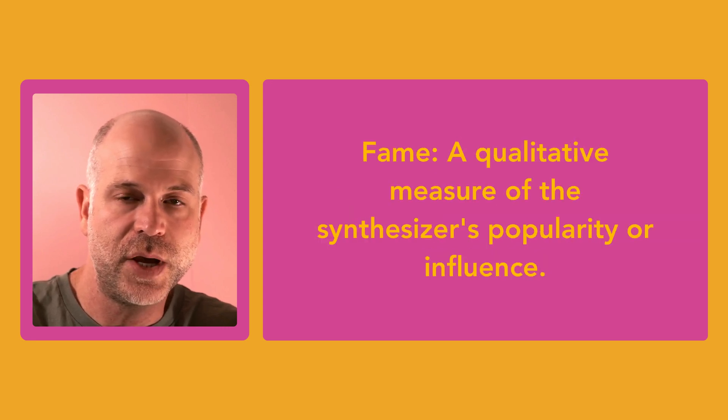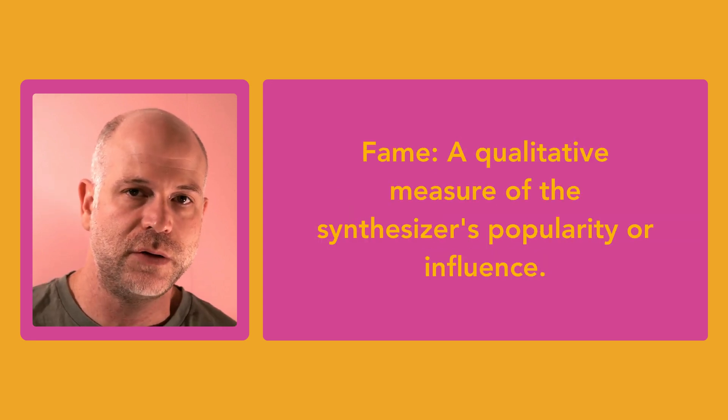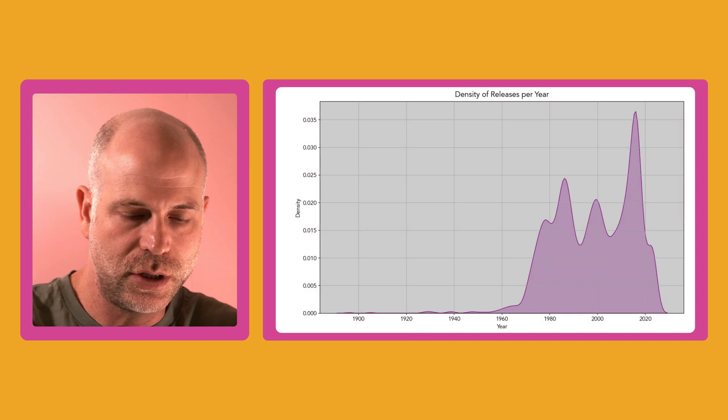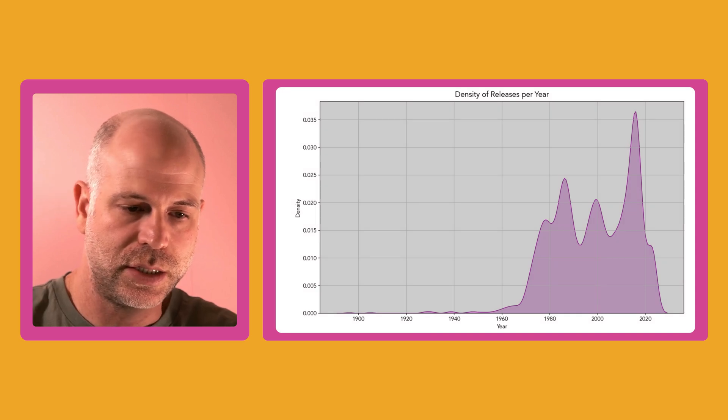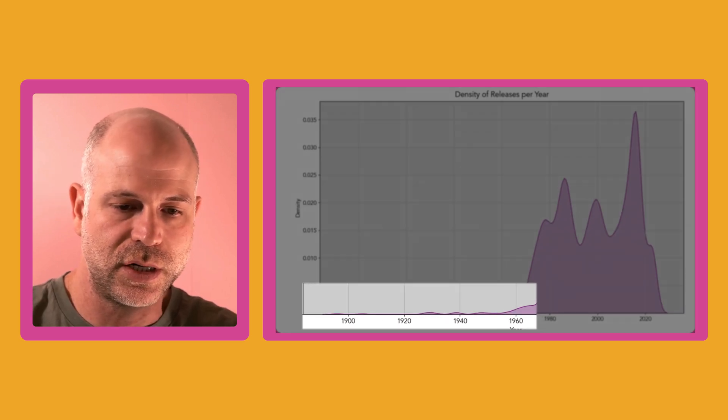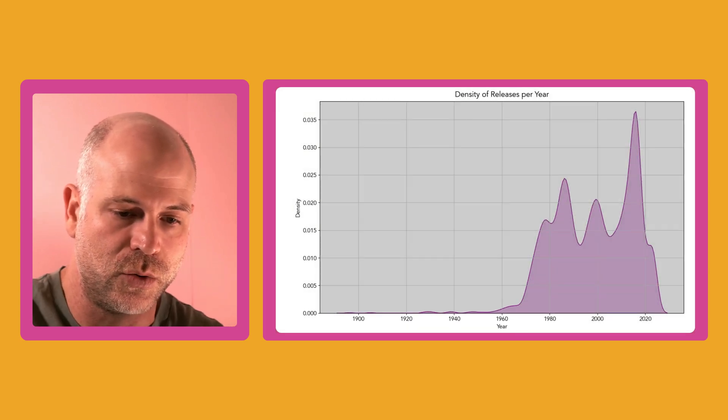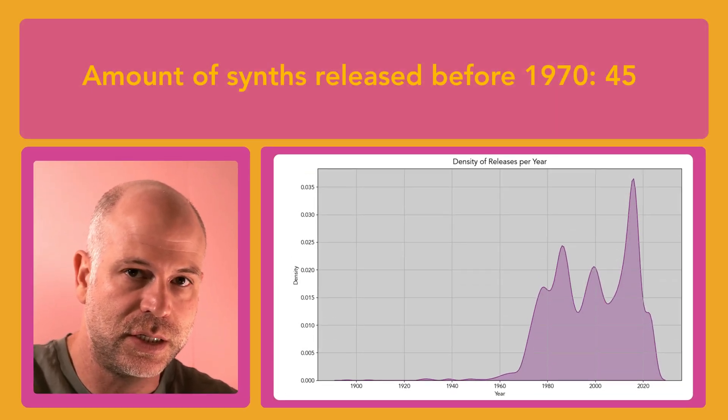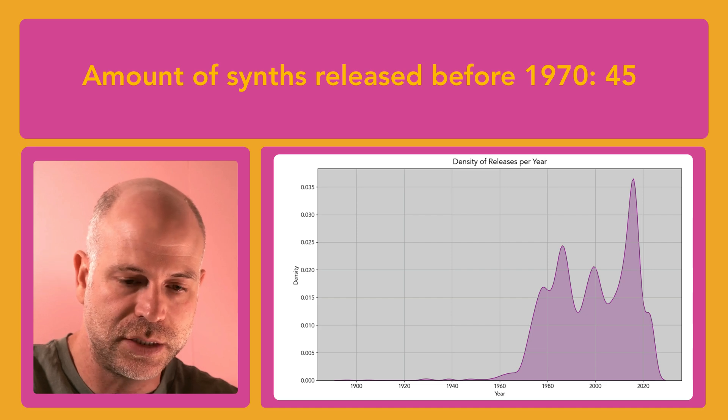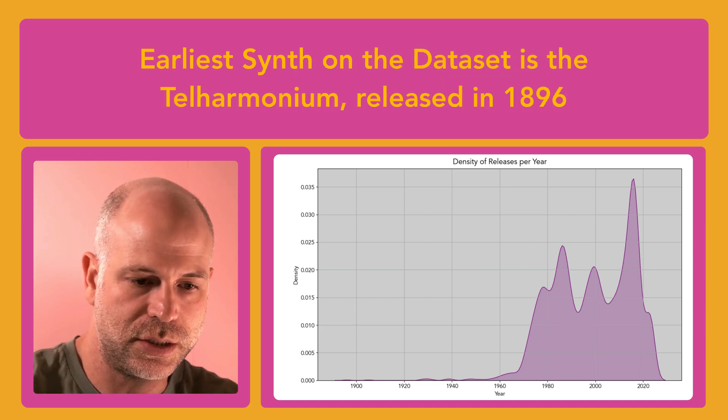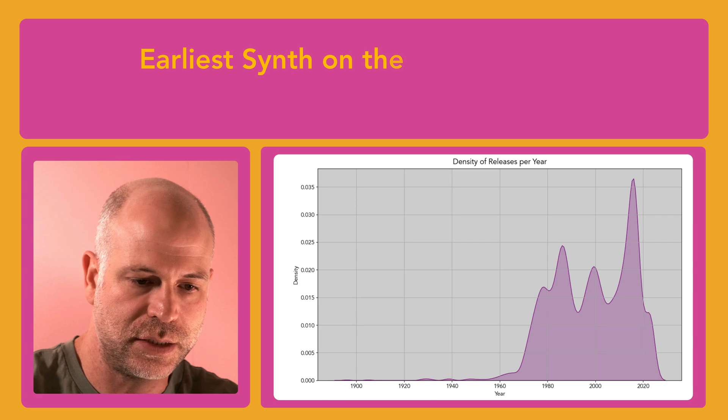And fame is a measure of the synth popularity or influence. The first thing I want to look into is releases over the years. As the density plot shows, there's very little activity before the mid-60s, which is expected. If looking into that, we see that the amount of synths in this list which were released before 1970 is 45, with the earliest synth on the list being from 1896.